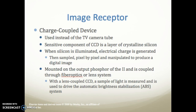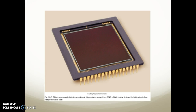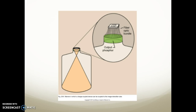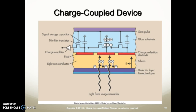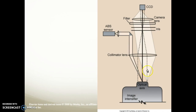The image receptor in digital fluoroscopy is a charge-coupled device (CCD), used instead of a TV camera tube. Its sensitive component is a layer of crystalline silicon. When silicon is illuminated, electric charge is generated, then sampled pixel by pixel and manipulated to produce a digital image. It is mounted on the output phosphor of the II and coupled through a fiber optic or lens system. With a lens-coupled CCD, a sample of light is measured to drive the automatic brightness stabilization system.